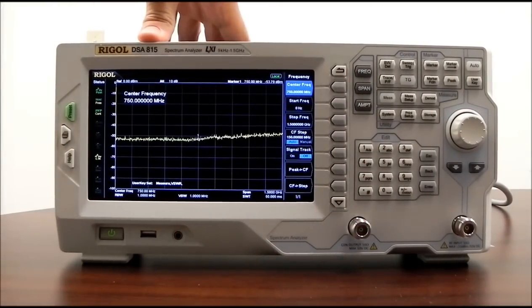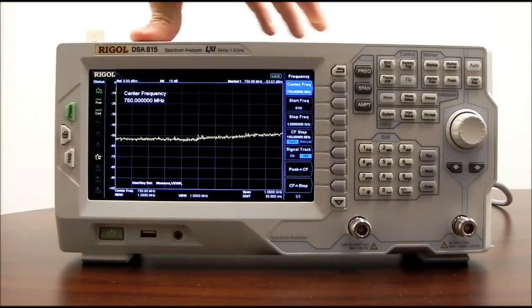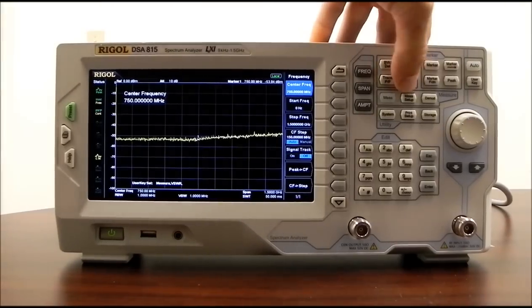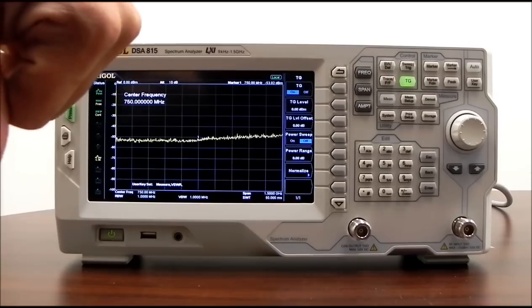The tracking generator output, for those of you that aren't familiar, is a frequency scanning RF source with an adjustable amplitude. So if we're scanning from 9 kHz to 1.5 GHz and we enable that tracking generator, we're going to have an output, in this case it is set to 0 dB.